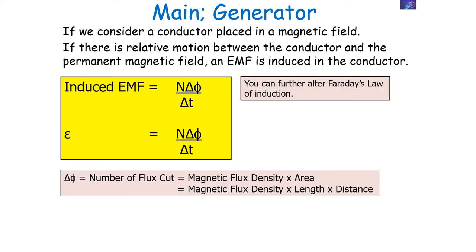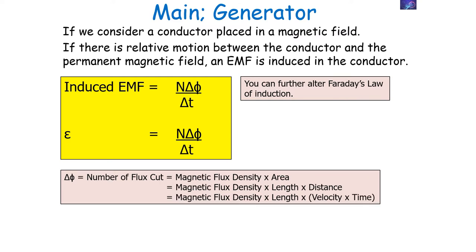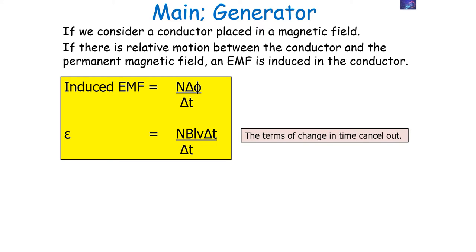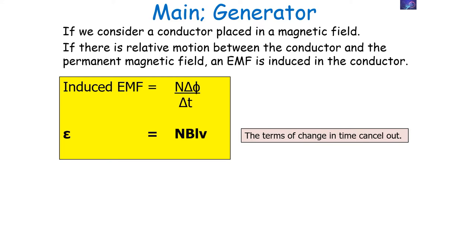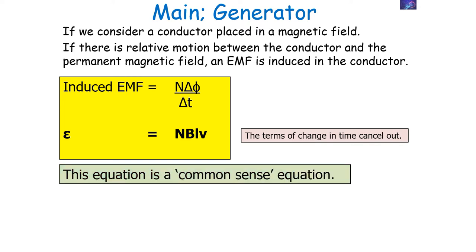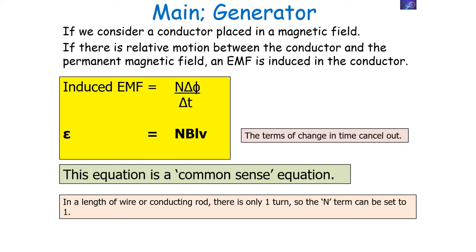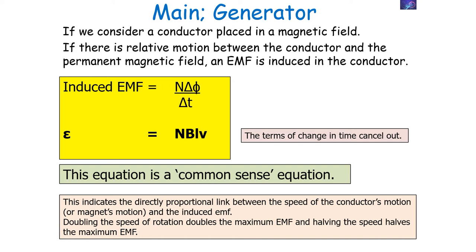We can further develop Faraday's law: delta phi equals flux density times area, area equals length times distance, and distance equals velocity times time, so delta phi equals BLV delta T. Substituting into our equation, the delta T terms cancel, giving EMF equals NBLV. This equation is not given in your examination book — it is a common-sense equation. The factors that alter the rate of change of flux linkage are flux density, number of turns, length of conductor, and the speed (velocity of conductor or magnet). For a single wire or rod, N equals 1. Doubling the speed of rotation doubles the maximum EMF.